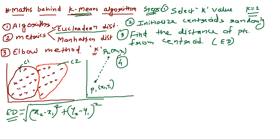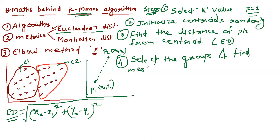The fourth step says: select the groups (clusters) and find the mean value. The mean value is the mean of the square of distances of all the points within the same cluster. We are going to talk about each and every step with the help of a simple example.